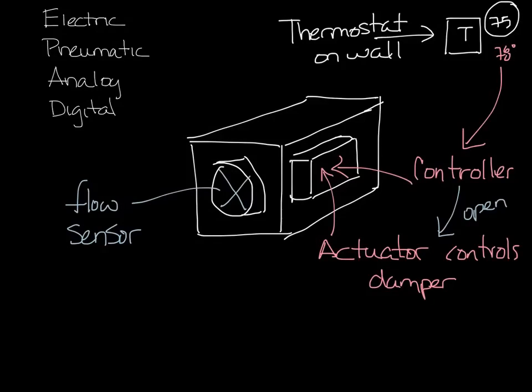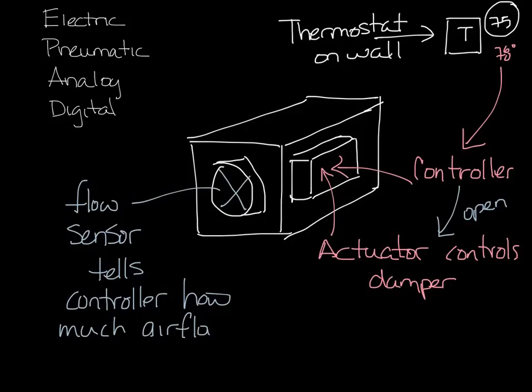This whole time the flow sensor is measuring the air flow in the box so that it gets the right amount of air flow regardless of what the pressure is in the system itself. So that's a super simplified view of the operation of the controller, actuator, flow sensor and thermostat. Obviously you can have reheat and other things controlled by the controller but that gives you the basic idea.